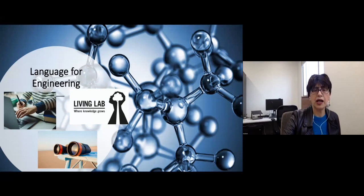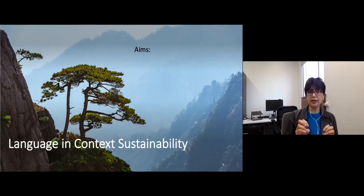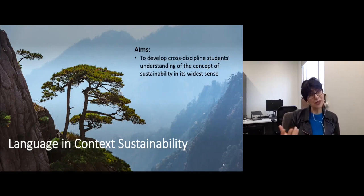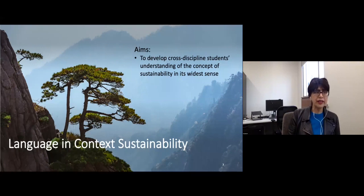Moving on to language in context for sustainability — this student cohort was a mix of postgraduate and undergraduate cross-discipline students, and it was an elective module. Its primary purpose was to provide students with a deeper understanding of sustainability, which went beyond the predictable answers of saving polar bears, rainforests, or recycling. We developed cross-discipline students' understanding of the concept of sustainability in its widest sense, and how it links to all disciplines — whether art, science, technology, or engineering — and how it impacts on their everyday lives.